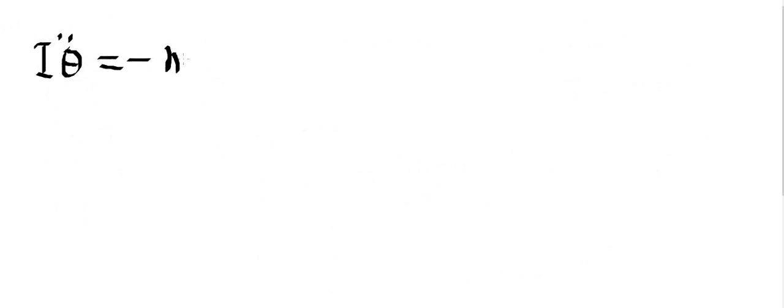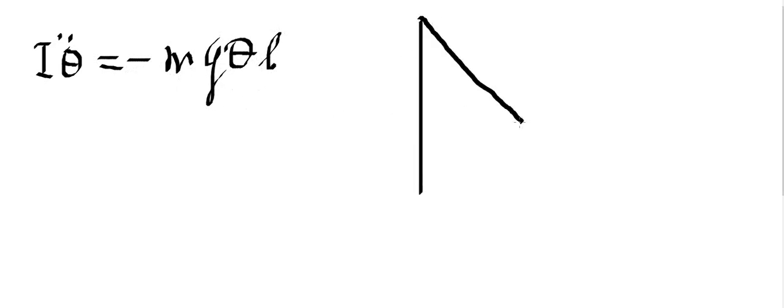So we can say that the moment of inertia times the second derivative of the angular displacement is equal to negative mg theta L. This negative sign is because theta is going one way and mg is acting the other way — these two are opposite — that's why we give a negative sign.